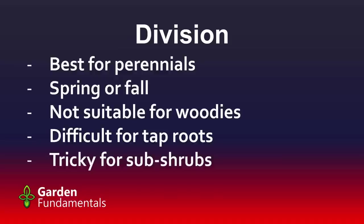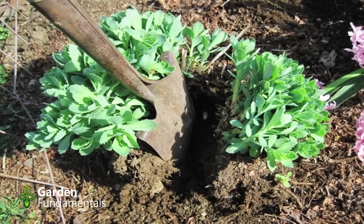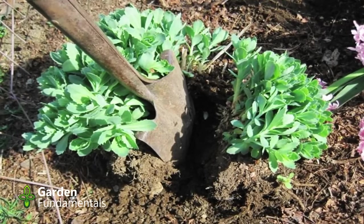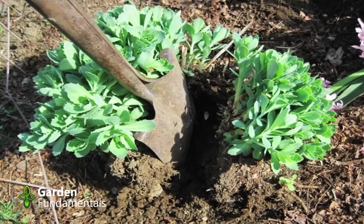Division is used mostly for perennials and is generally done in spring and fall when plants aren't actively growing. It's not suitable for most trees and shrubs. Even perennials with tap roots can be difficult to propagate because splitting the plant means cutting that tap root in half, and some plants will die if you do that. There's also a group of plants called subshrubs — things like lavender and Russian sage — that grow more like shrubs but are treated like perennials. Those can be difficult to divide. Division is pretty simple: most people dig up the clump and use a spade or shovel to cut it into pieces, then plant each piece.